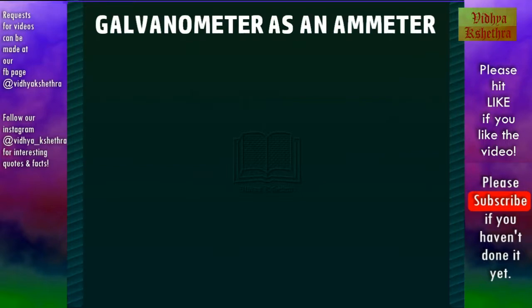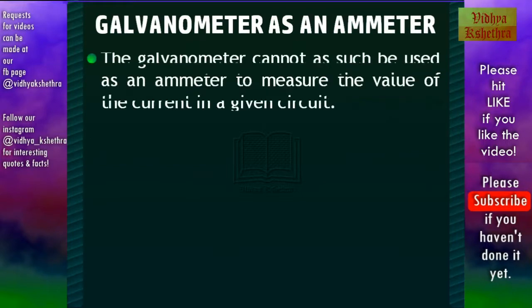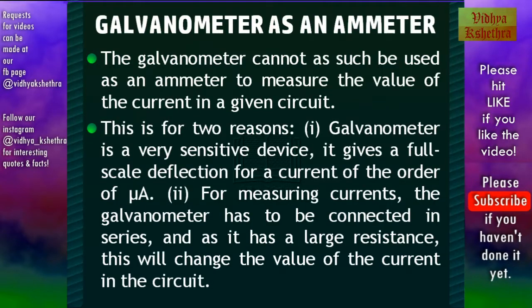Now we shall see how we can use this galvanometer as an ammeter. The galvanometer cannot as such be used as an ammeter to measure the value of the current in a given circuit. It can be used as a detector of current in a circuit as such. This is for two reasons.